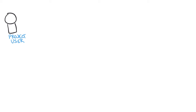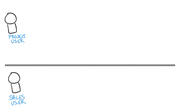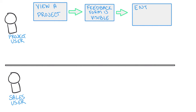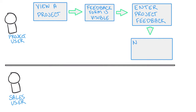Here we're in our whiteboard. The first thing we want to make sure we clarify is what user are we designing this business process for? We're going to identify our project user and our sales user that we identified before. Now our project user, the first thing they're going to do is go to the project record. On the project record, we want this feedback form to be made visible or accessible to them. Then we want our user to enter the project feedback. And when they enter project feedback, we want that information to be saved to a related project feedback form.